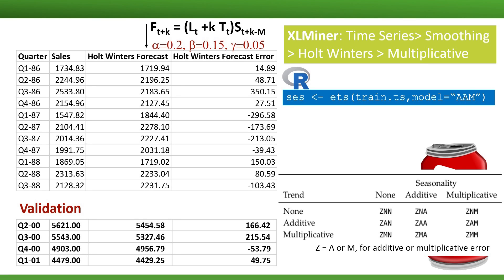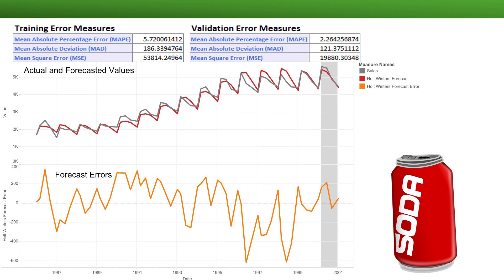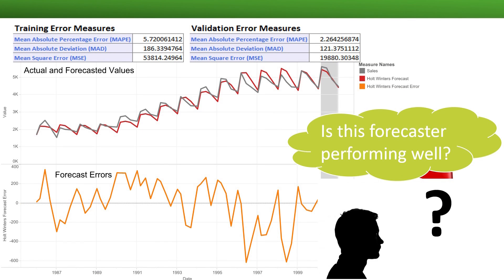Let's now look at the performance of the Holt-Winters forecaster on the soft drink series by examining the performance charts and metrics. Do you think this forecaster is performing well? From the charts, we see that seasonality and trend both seem reasonably captured. Our validation MAPE is 2.26%. Whether this accuracy is sufficient depends on how the forecasts will be used.